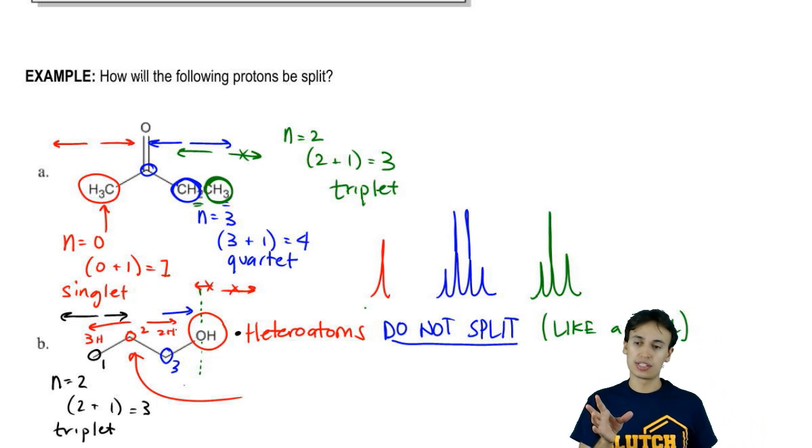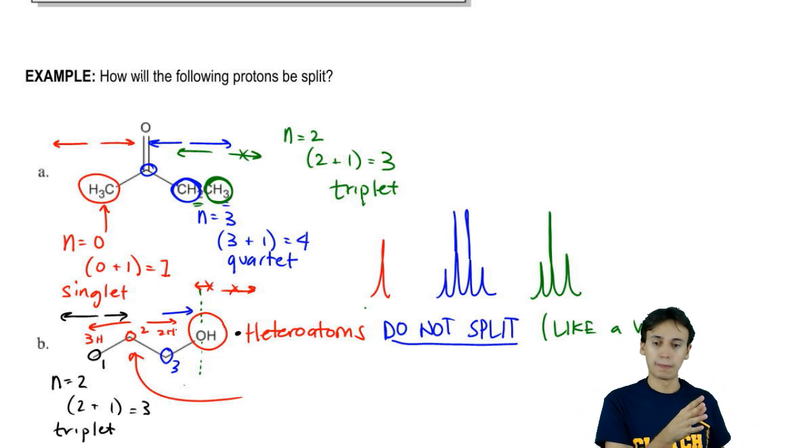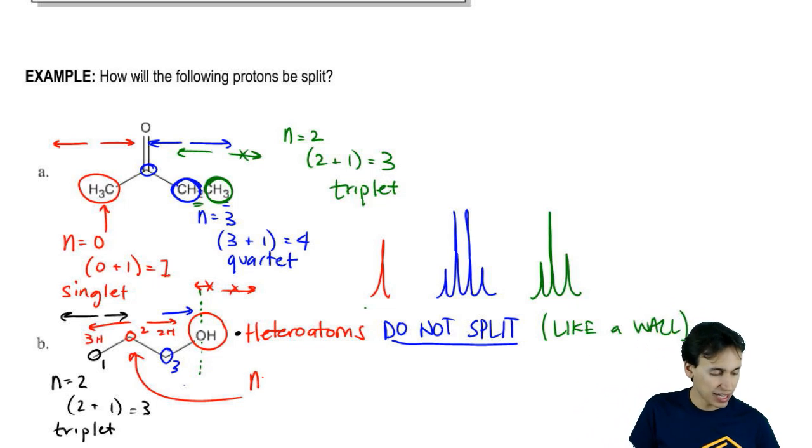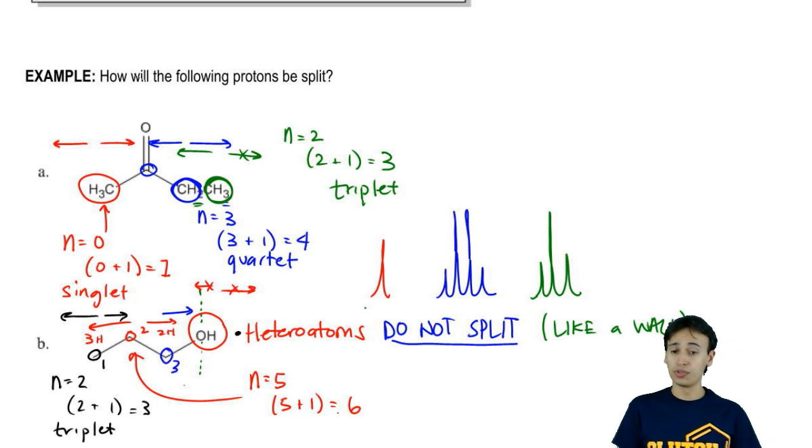That means I've got three on one side, two on the other. Here, that means N is actually equal to 5 total, meaning I have 5 plus 1, which equals 6. Six is going to be a sextet.